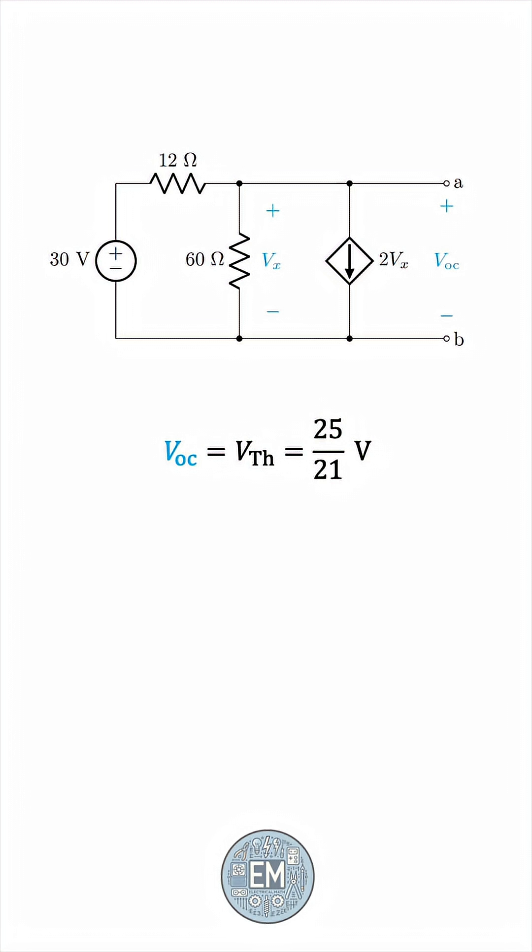The next step is to find the Thevenin resistance, the resistance looking into terminals A and B. Usually, we would deactivate the independent sources and find the equivalent resistance. But when we have dependent sources, these cannot be deactivated. So, we'll have to use another method here.